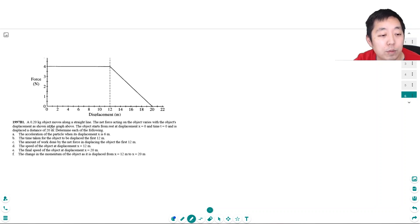Okay, so here we go. We have a 0.2 kilogram object moving along a straight line. The net force acting on the object varies with displacement as shown on the graph above. The object starts from rest at displacement x equals 0 and time t equals 0, and is displaced a distance of 20 meters total.